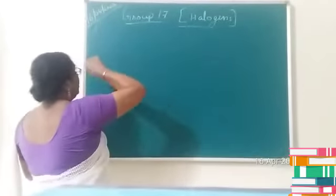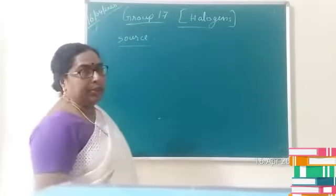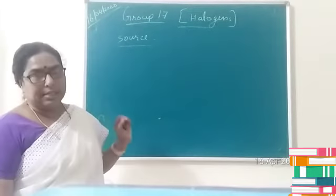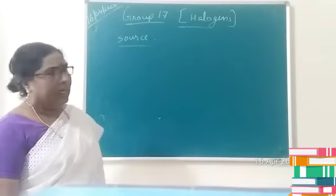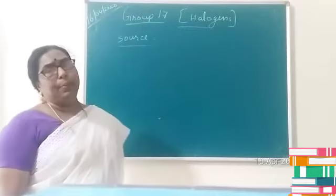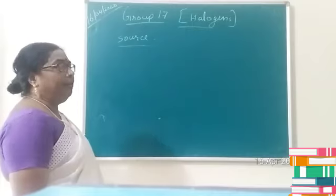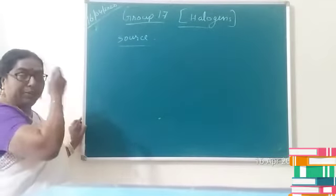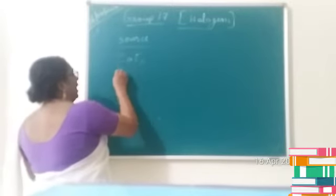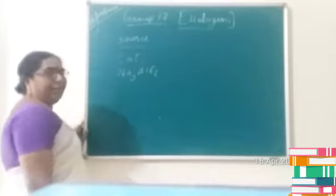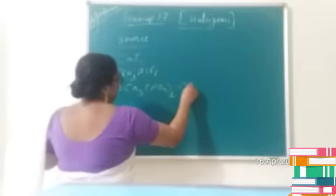Let us consider the sources of Group 17 elements. The elements are fluorine, chlorine, bromine, iodine, and astatine. Since astatine is a radioactive element, we are not going to discuss it. The first four elements — fluorine and chlorine — are present in large quantity compared to bromine and iodine. The main sources of fluorine are insoluble fluorides like fluorspar (calcium fluoride), cryolite, or fluoroapatite, which is 3Ca3(PO4)2·CaF2.